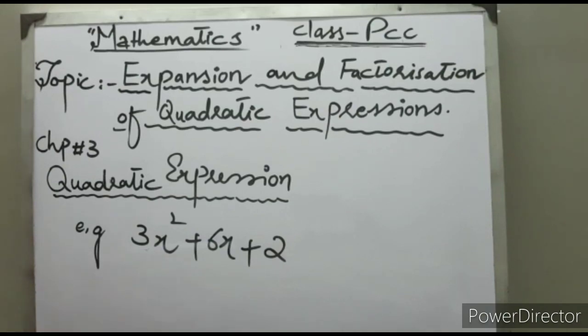For example, 3x² + 6x + 2 is a quadratic expression. This is not a quadratic equation. Students, you can see there is no equal sign in this expression. Therefore, we call this quadratic expression.